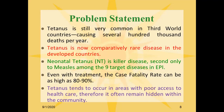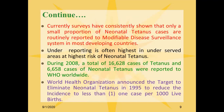Even with treatment, the case fatality rate can be as high as 80 to 90 percent. Tetanus tends to occur in areas with poor access to healthcare, and therefore it often remains hidden within the community. Surveys have consistently shown that only a small proportion of neonatal tetanus cases are routinely reported to notifiable disease surveillance systems in most developing countries. Underreporting is highest in underserved areas at highest risk.